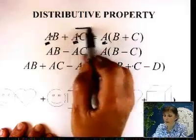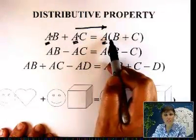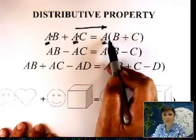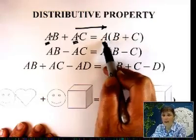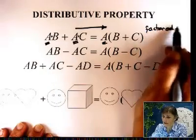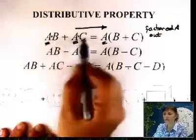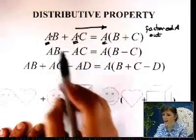And when you go from this portion to that portion, you can also use the distributive property. Or you can say, I factored A out. Factored A out, which is a common factor in these two terms.